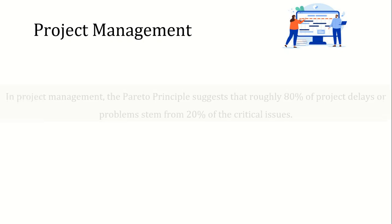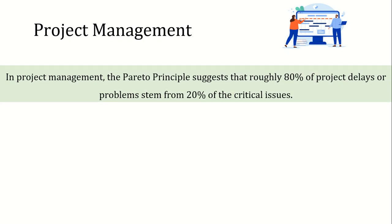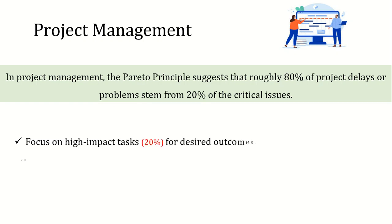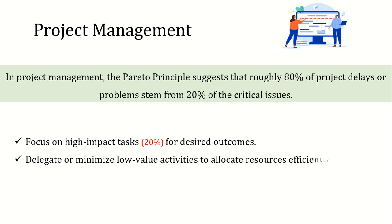Next comes project management. Here, the Pareto Principle suggests that roughly 80% of project delays or problems stem from 20% of the critical issues. To enhance project success rates, project managers can identify and address the key challenges or bottlenecks that significantly impact project timelines and outcomes, while allocating resources and attention to resolving these critical issues and minimizing delays.